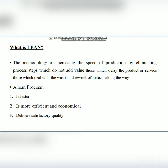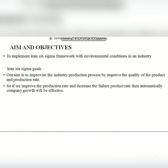The objectives and aim of Lean Six Sigma are to improve industry production by improving quality and production rate. Once we improve the production rate, it causes a decrease in the failure rate, and automatically the company's growth becomes more effective. This is the concept of the Lean Six Sigma factor.